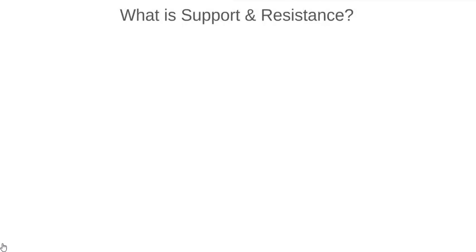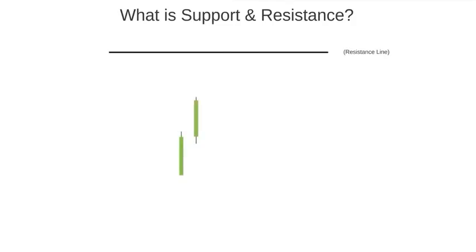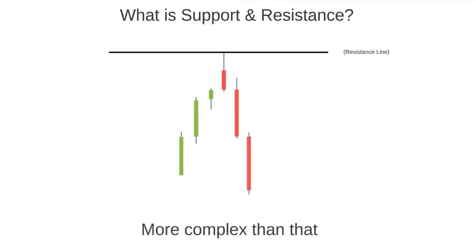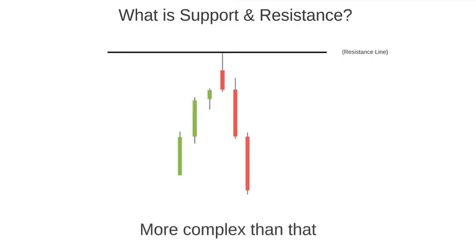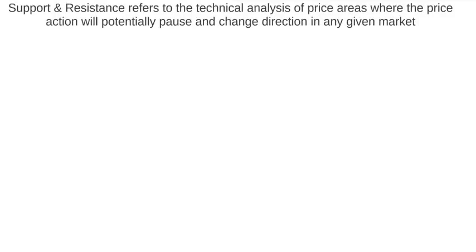Let's start with what support and resistance is. When a lot of traders think of support and resistance, they think of pinpoint lines on a chart that try to predict where the price will turn on a dime, but it's more complex than that. Support and resistance refers to the technical analysis of price areas where the price action will potentially pause and change direction in any given market.